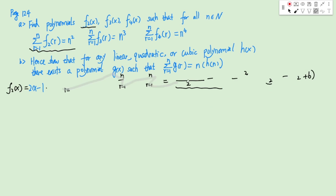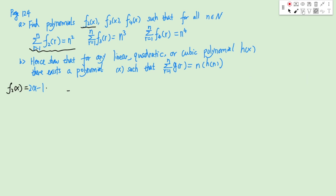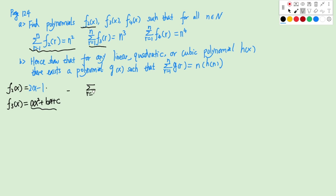Let's take a look at F3(x). Because the sum equals N cubed, F3(x) will be a polynomial of degree 2. So we write F3(x) as Ax squared plus Bx plus C. We plug this into the left-hand side: sigma R from 1 to N of (AR squared plus BR plus C). This gives A times N(N+1)(2N+1)/6, plus B times N(N+1)/2, plus CN.